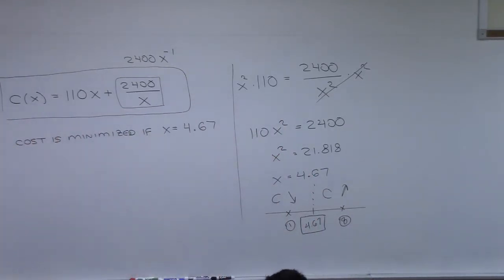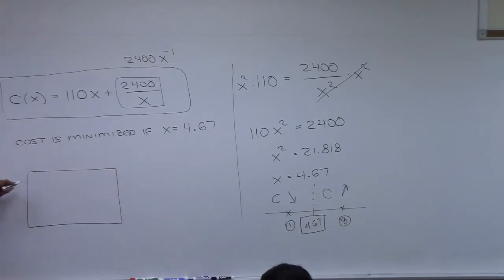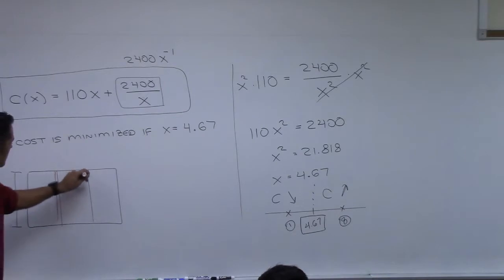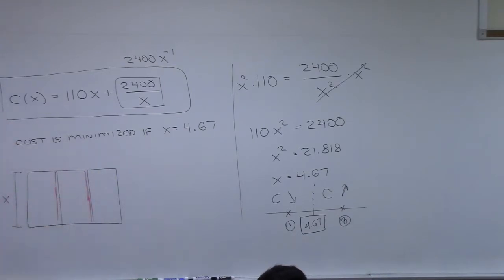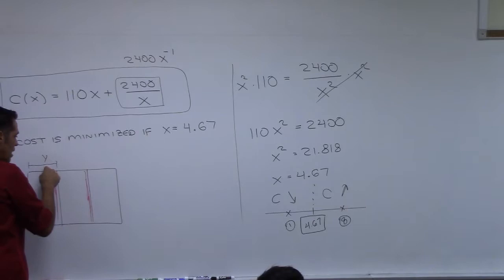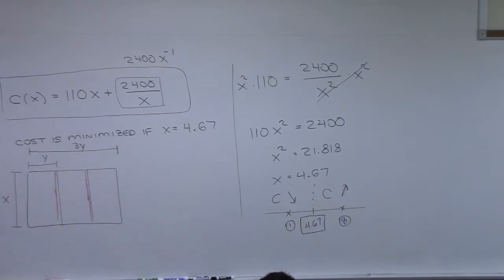Now, I have not yet answered the two questions for the bonus. First: what are the dimensions of the actual enclosure? Second: what is the minimum cost? Go back and look at the notes from last class. We called the distance across the pens x, broke this into three pens, and the other dimension y. We know x is 4.67, and we need to find y.